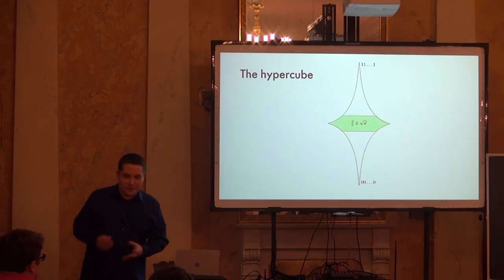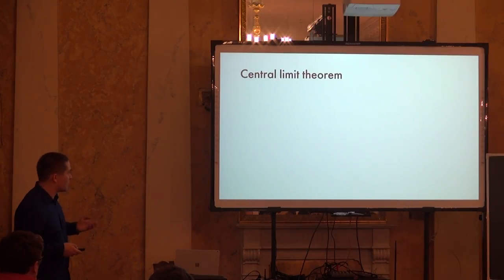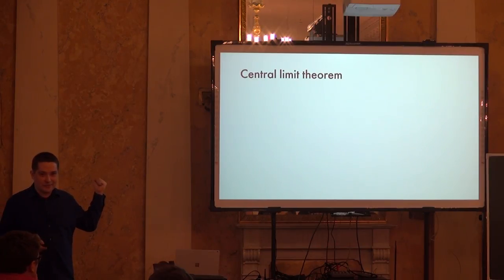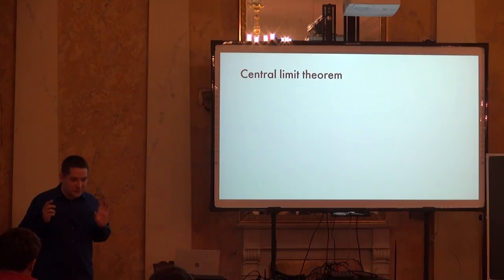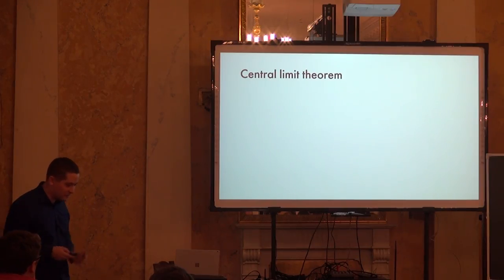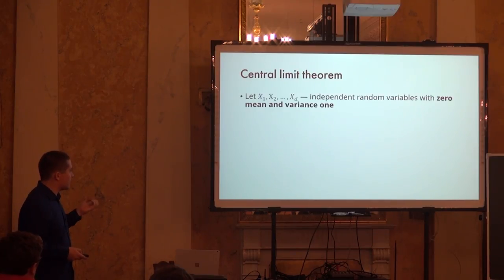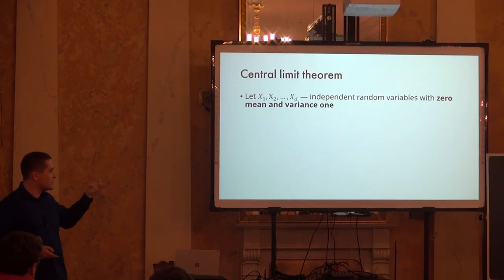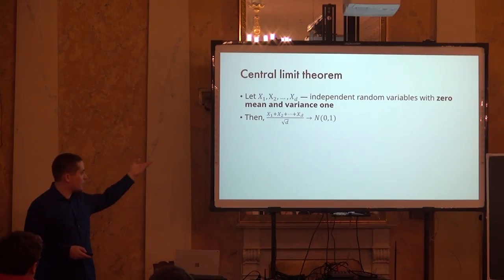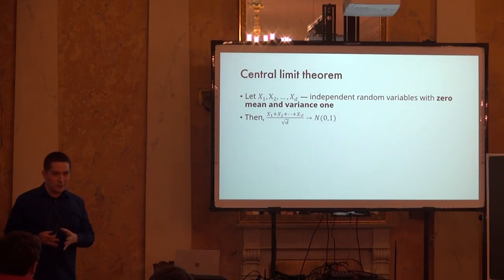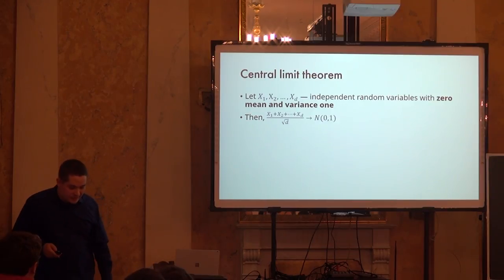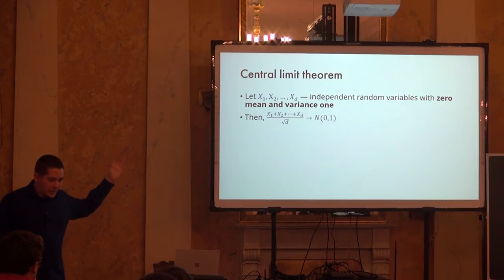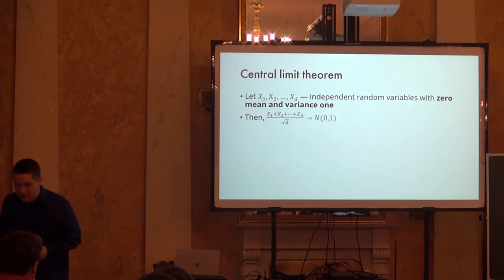Why does this happen on both the sphere and the hypercube? In both cases it's related to the central limit theorem, which says that if you have independent random variables with mean zero and variance one, their sum divided by √D converges to normal distribution. This √D is precisely why you see √D in both previous settings. The CLT has been extensively generalized: how to get Gaussian behavior when variables are not fully independent, or when D is finite rather than asymptotic.